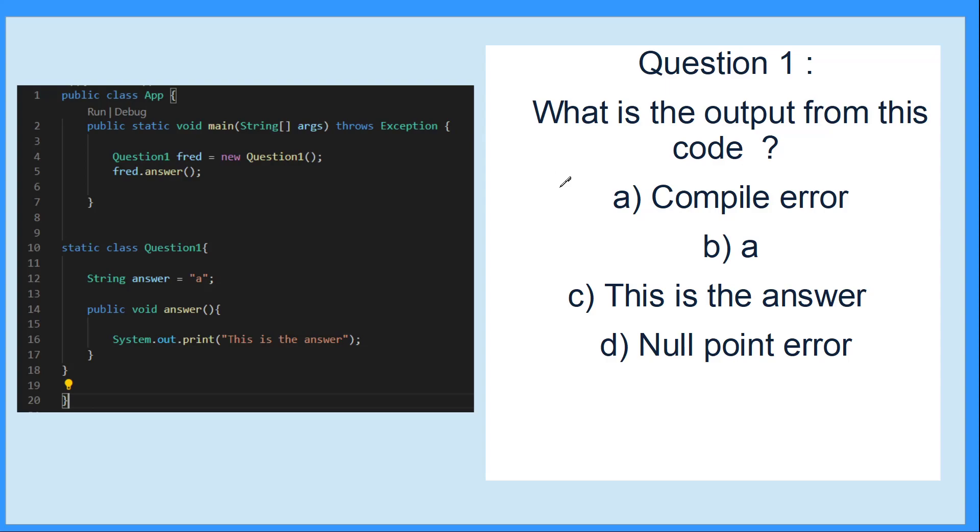This is question 1 and the answer would be C. Even though we have one class and a secondary class within that public class, we've called it a static class and we're allowed to instantiate it from the static main method, so there wouldn't be an error. On line 4 we've created an object, and in line 5 we're calling the method answer. That method is public so it would be called, and it's void so it's not looking to return anything. So that means it would print out 'this is the answer.'